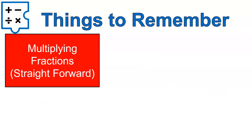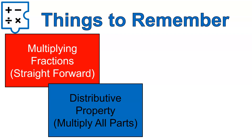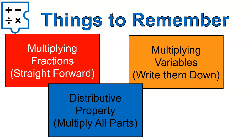A couple of things to remember: when multiplying fractions, it's straightforward — top times top, bottom times bottom. With the distributive property, multiply the outside number times everything inside the parentheses. When multiplying with variables, just write them down and carry them on to the end. I hope that video was helpful for you. Have a wonderful day.